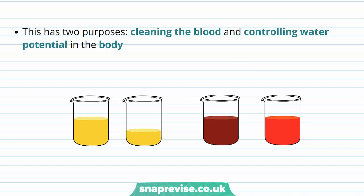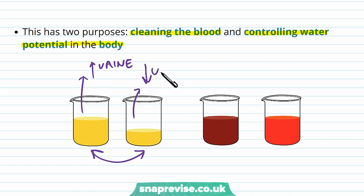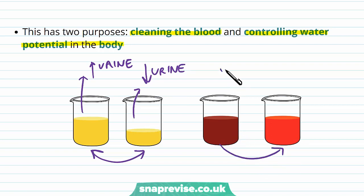The kidney has two main purposes: cleaning the blood of toxins and waste products, and also controlling the water potential in the body. It's important that water potential is maintained so that all the cells in our body have the right fluid amount in them, and our tissue fluid has the right consistency and volume. The kidney adjusts the volume of urine it produces to account for how much water we need to keep. A high amount of urine means we're trying to lose water; a lower amount means we're trying to conserve it.